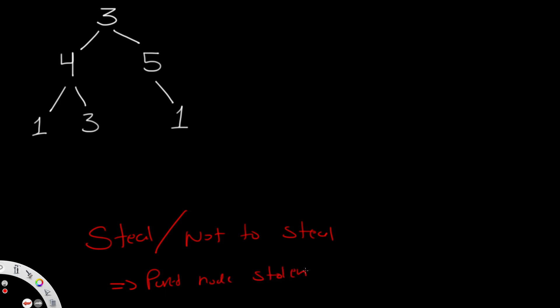We want to keep track of whether we stole from the parent node. If we did not steal from the parent node, we can steal at the current node. But if we did steal at the parent node, we cannot steal there at all. Since the root node has no parent, we pass false — meaning the parent was not stolen from — and we try out both options: stealing and not stealing.